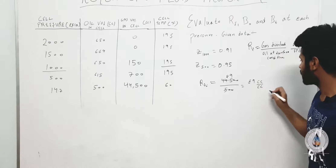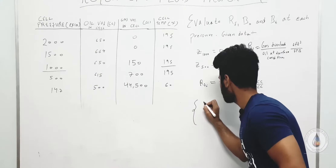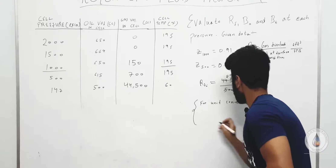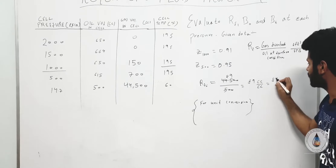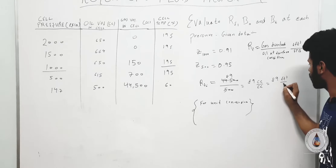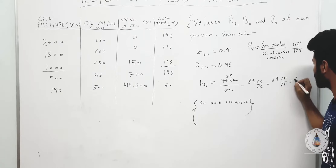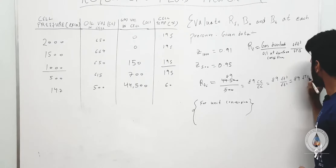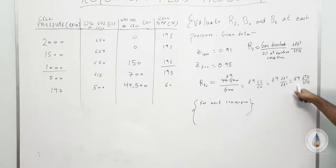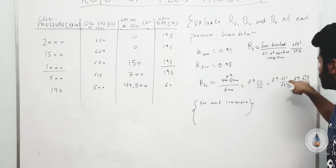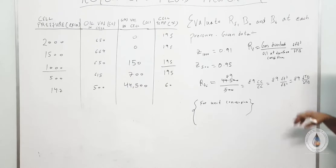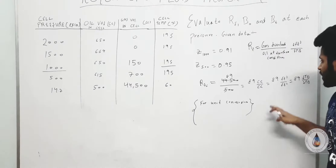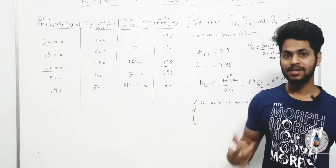This is an important unit conversion concept. We can write this as 89 cubic feet per cubic feet, or 89 stock tank barrels per stock tank barrel, because CC per CC is equivalent to cubic feet per cubic feet and stock tank barrel per stock tank barrel when the entire data is at surface condition. So there won't be any problem converting these units since the values are at surface conditions.